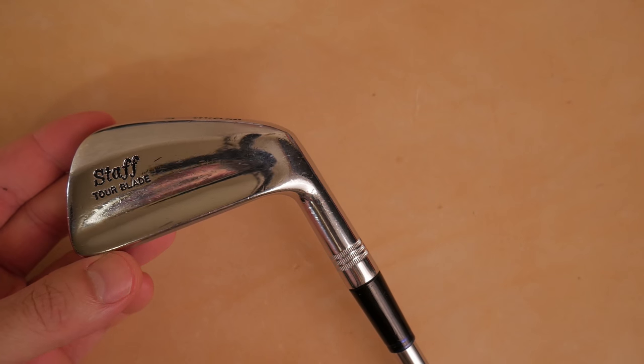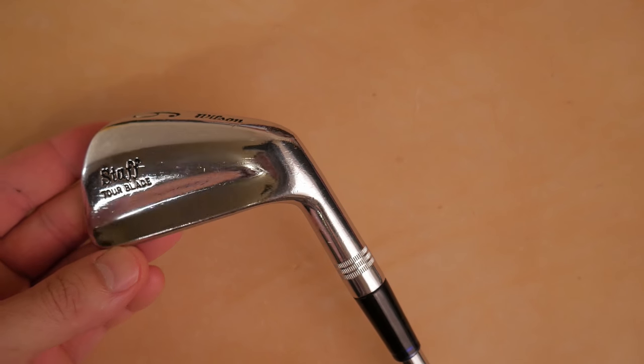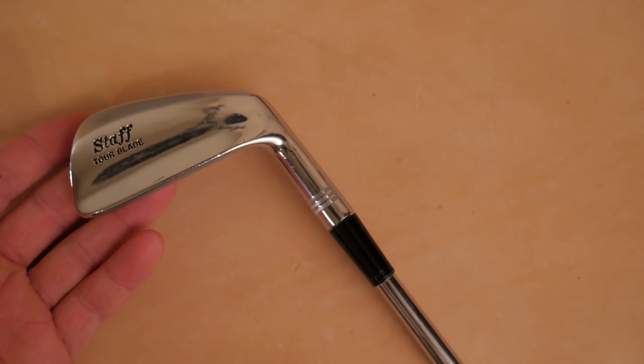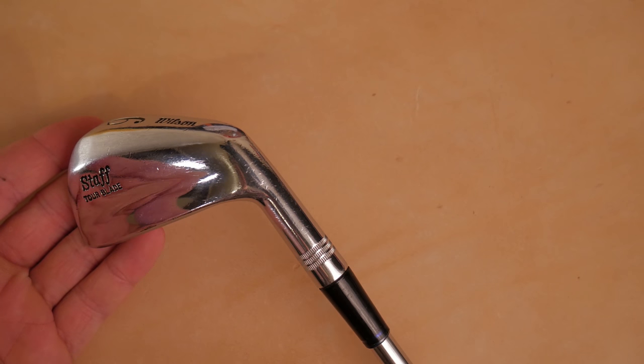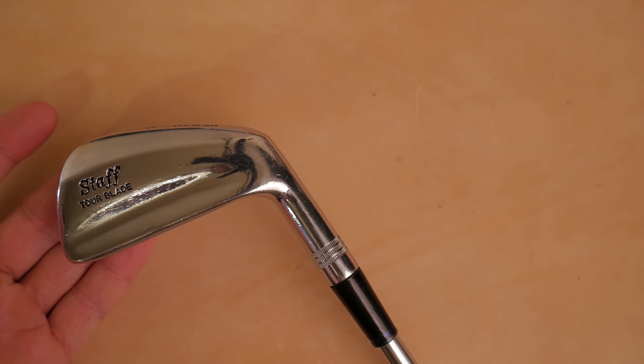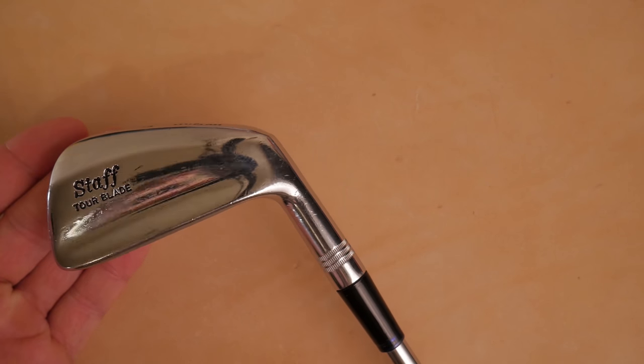None of them have the Wilson Staff Tor Blade in their golf bag. This is a fun club from the late 70s. It started on sale in 1978 and was on sale through 1980.